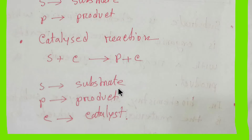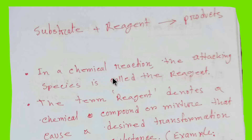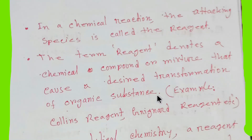Substrate plus reagent equals product. In a chemical reaction, the attacking species is called the reagent. The term reagent denotes a chemical compound. A reagent may be a chemical compound or mixture that causes a desired transformation of an organic substance — that is, the substrate.